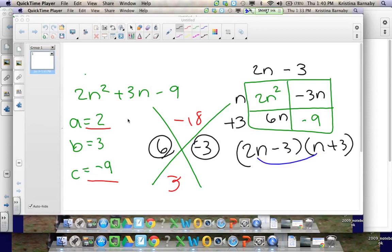2n times n is 2n squared. This is 6n minus 3n, which gets to the 3n, and that's negative 9. So this matches up with 2n squared plus 3n minus 9.